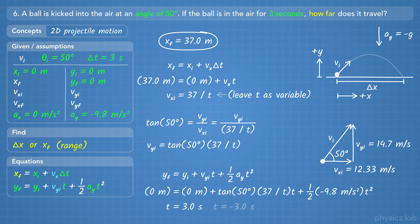So that's an example of a problem where we're not given a lot of information and we need to find different values using multiple steps.